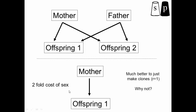This is often referred to as the two-fold cost of sex. This female could have essentially twice the fitness from the gene point of view if she just cloned herself — those clones are fully related to her. So why is it that we see sexual reproduction so much, and why haven't species just evolved so that females make clones of themselves? This would basically double their fitness instantly.